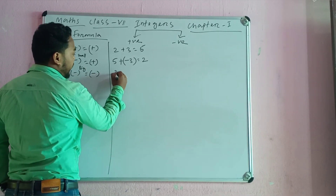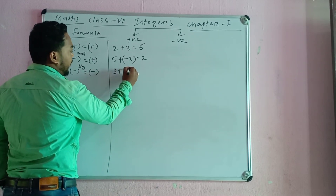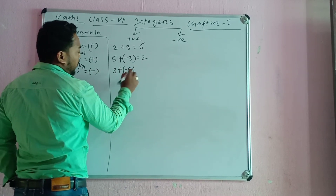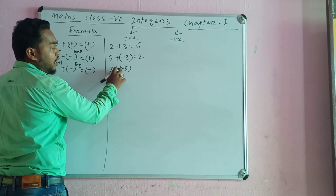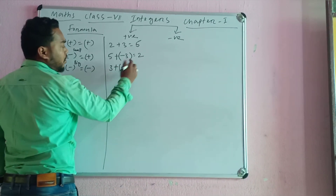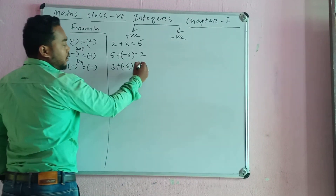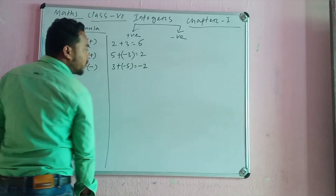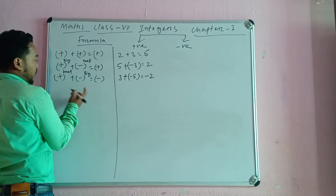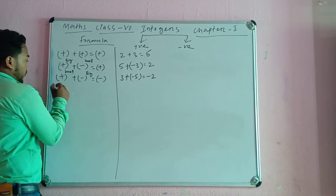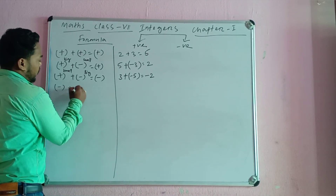We will write 3 small and plus minus 5. The symbol is minus. Minus is minus. This is very important for everyone. This is minus plus minus.